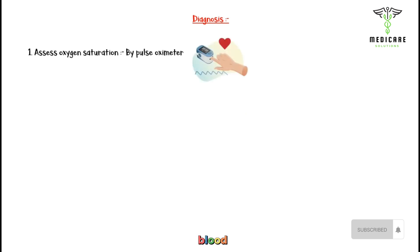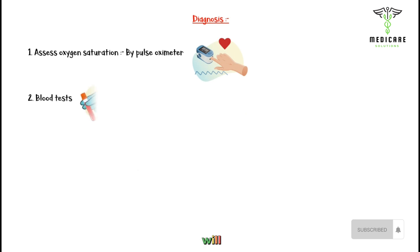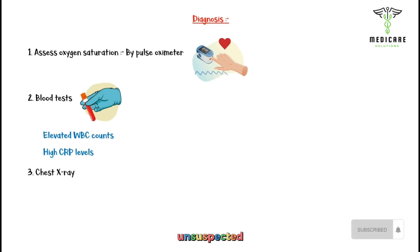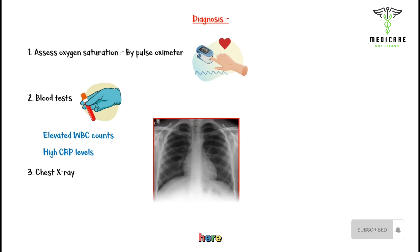First, the patient's blood oxygen saturation should be assessed by a pulse oximeter. Blood tests will show elevated white blood cell counts and high C-reactive protein levels due to ongoing inflammation. A chest x-ray is mandatory in suspected pneumonia cases.